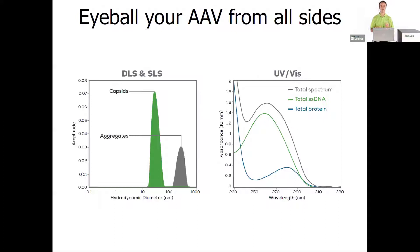All three pieces of data let you view your AAV from all sides. With DLS and SLS, we get an understanding of size and size distribution — capsid peaks around 25 to 30 nanometers, and aggregates found at much larger sizes. Based on the area under the curve for the capsid peak, we understand how much signal intensity comes just from capsids. We'll combine that with SLS results to understand how many capsids are in your sample.